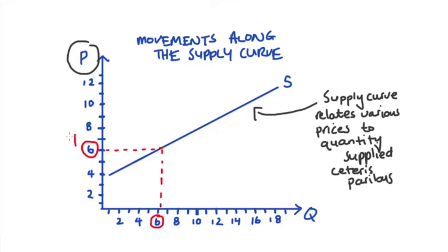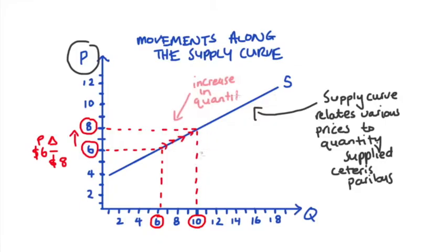If we increase the price in the market to eight dollars, this will lead to an increase in the quantity supplied from six to ten units and we model this as a movement along the curve like this. We're going to call this an increase in the quantity supplied and it's due to an increase in price.